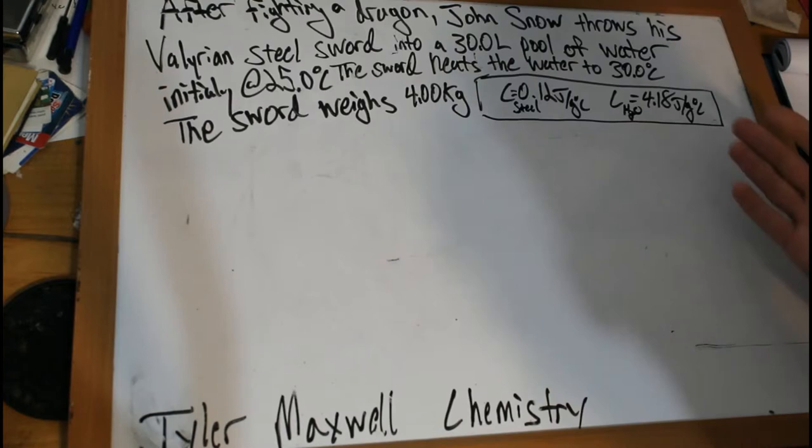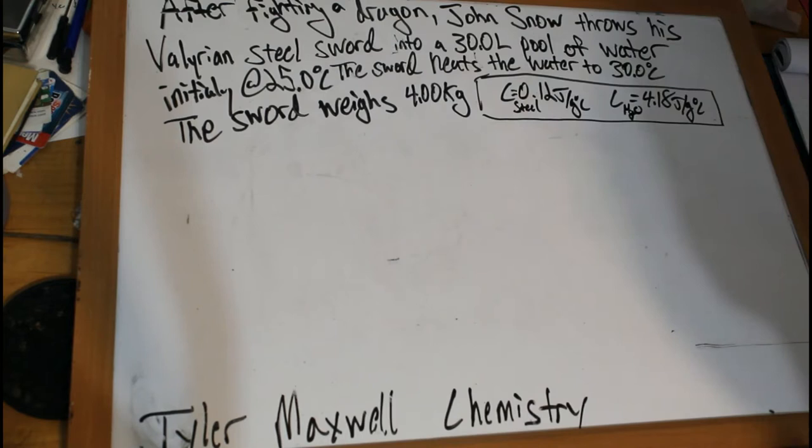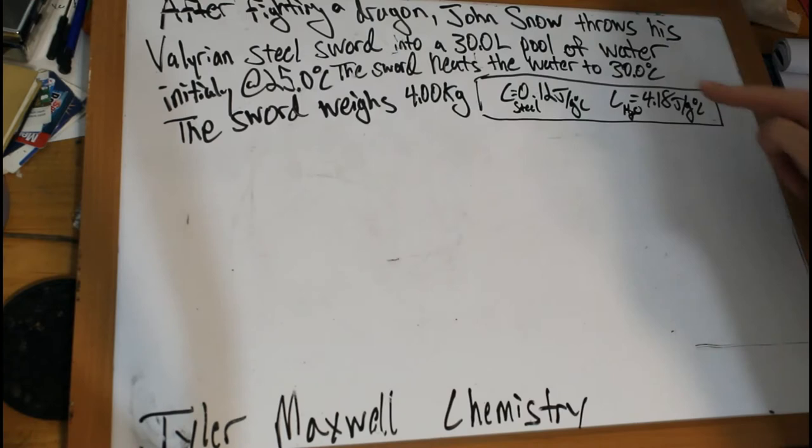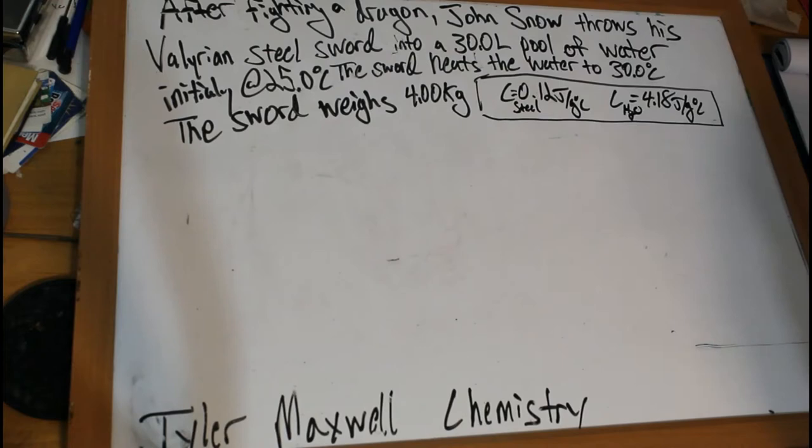So let's look at it together. First off, Jon Snow fights a dragon. Dragons breathe fire, got to heat up your swords. After fighting a dragon, Jon throws his sword into a pool of water and the hot sword causes the pool of water to heat up. It heats the pool from 25 to 30 degrees Celsius. Jon's a bit of a scientist himself and he knows his sword weighs four kilograms.